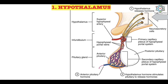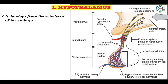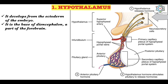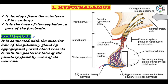The first endocrine gland is the hypothalamus. In this picture, you can see the hypothalamus, infundibulum, and pituitary gland and their organization in the brain for the releasing hormones. The hypothalamus develops from the ectoderm of the embryo. It is the base of the diencephalon, a part of the forebrain.